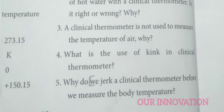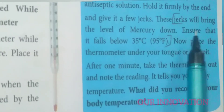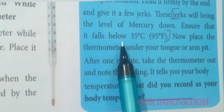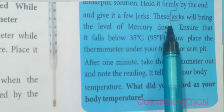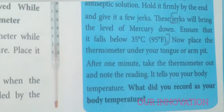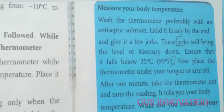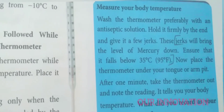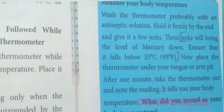Why do we jerk a clinical thermometer before we measure the body temperature? Jerking will bring the level of mercury down, ensuring it falls below 35 degree Celsius or 95 degree Fahrenheit. Before using a clinical thermometer, give it a good shake so that the mercury comes down to below 35 degree Celsius or 95 degree Fahrenheit.